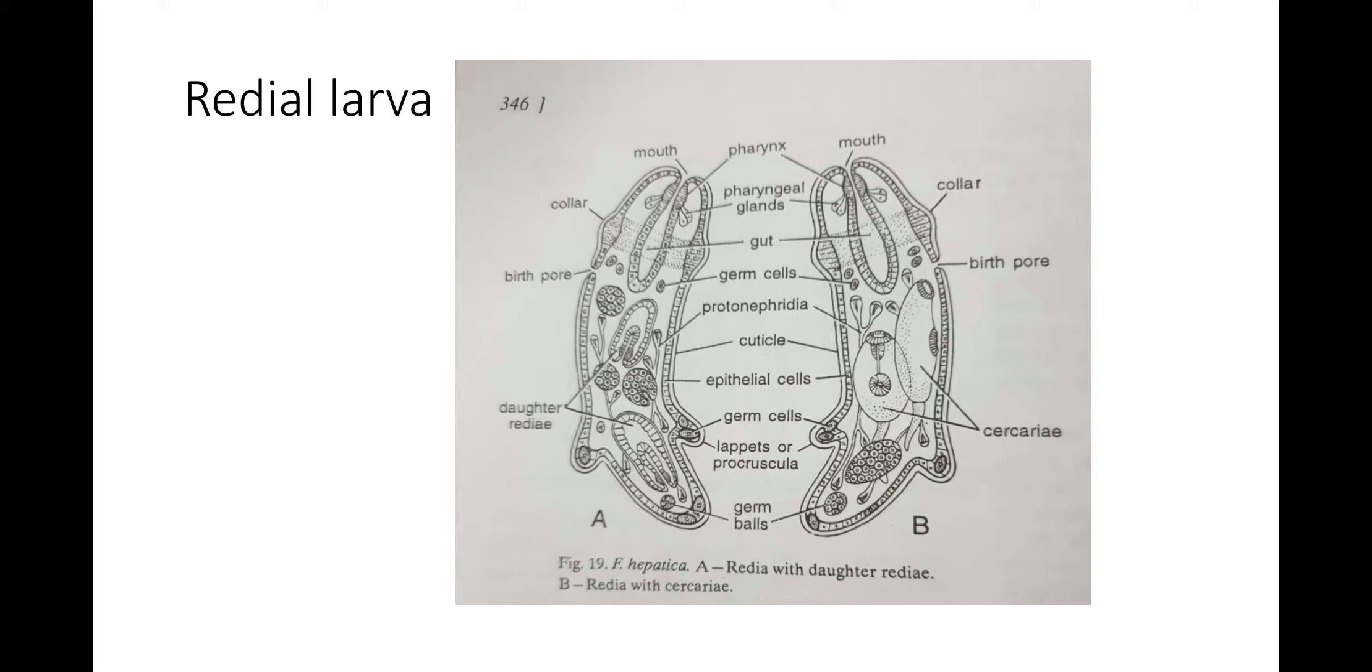Mouth leads into a short muscular pharynx, followed by an elongated sac-like intestine, which is lined by single layer of cells. Numerous unicellular pharyngeal glands open into pharynx. Protonephridia divide further and form a much-branched system. All the flame cells of each side open out through a common excretory duct. Body of larvae is packed with germ balls and mesenchyme cells.